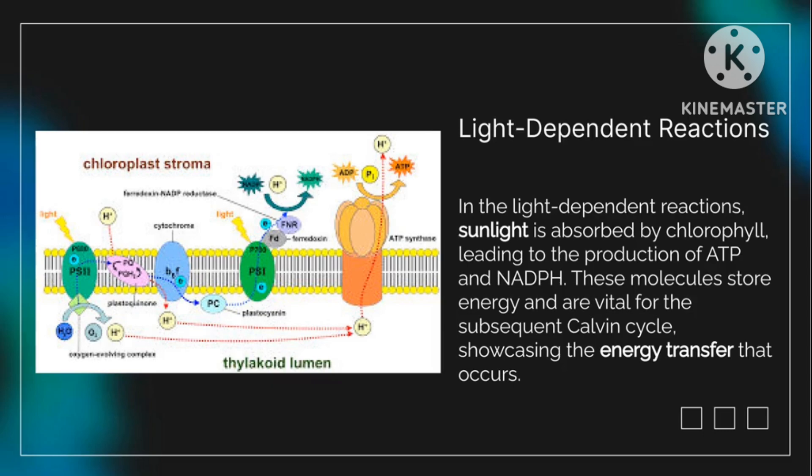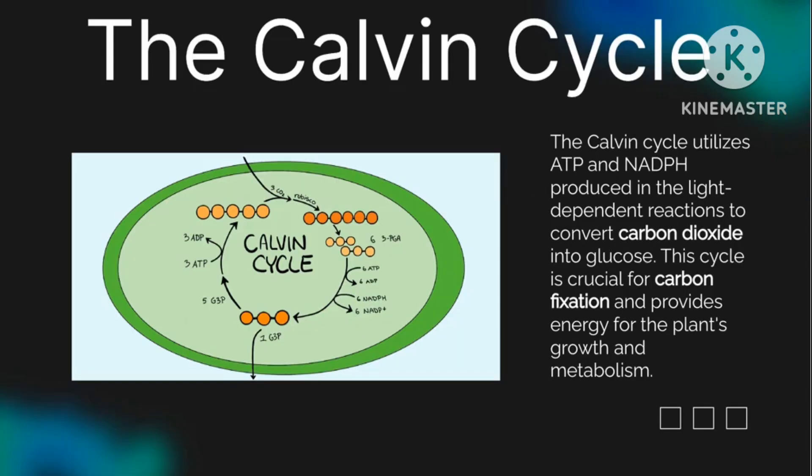The Calvin cycle. The Calvin cycle utilizes ATP and NADPH produced in the light-dependent reactions to convert carbon dioxide into glucose. This cycle is crucial for carbon fixation and provides energy for the plant's growth and metabolism.